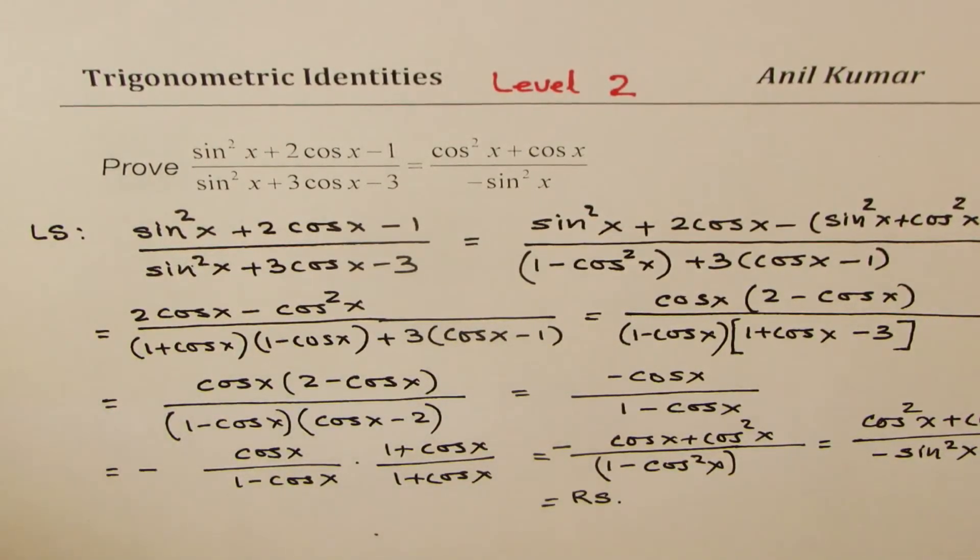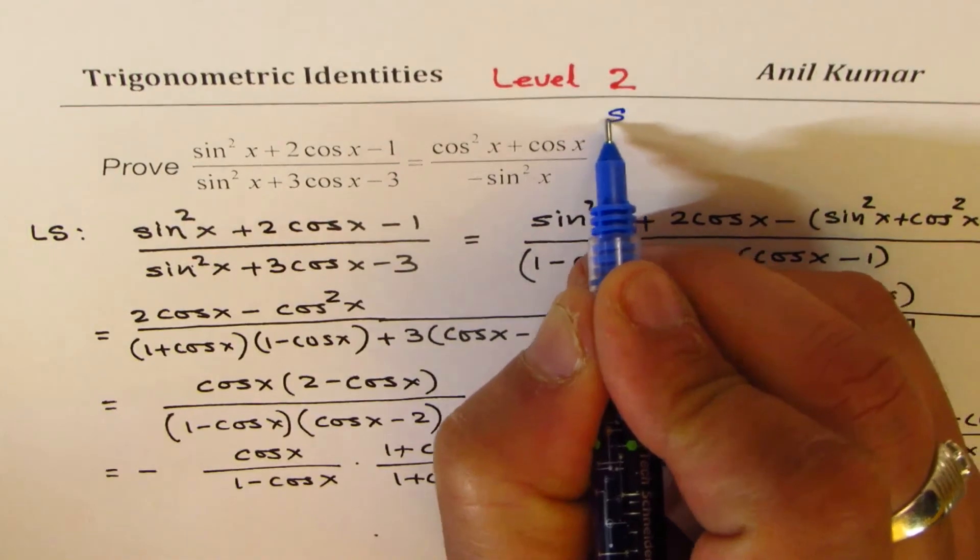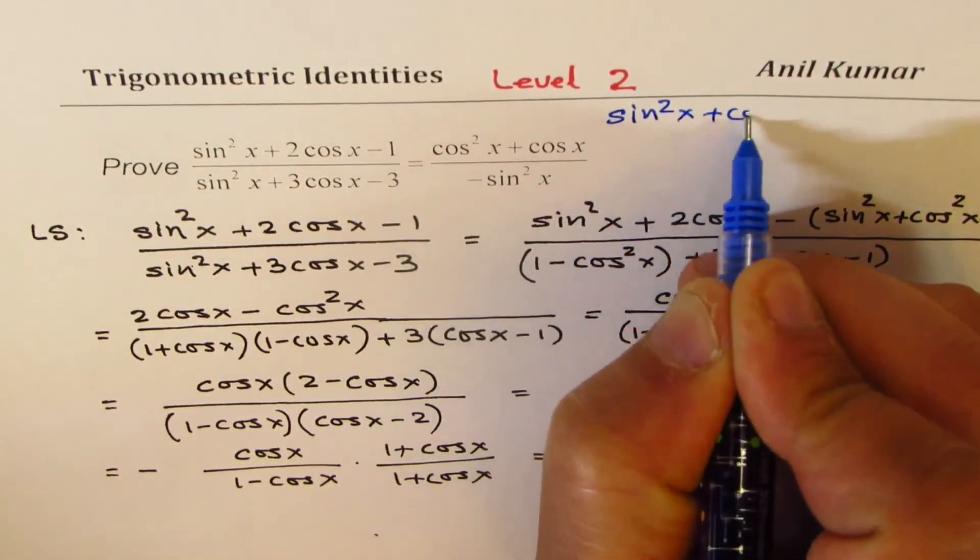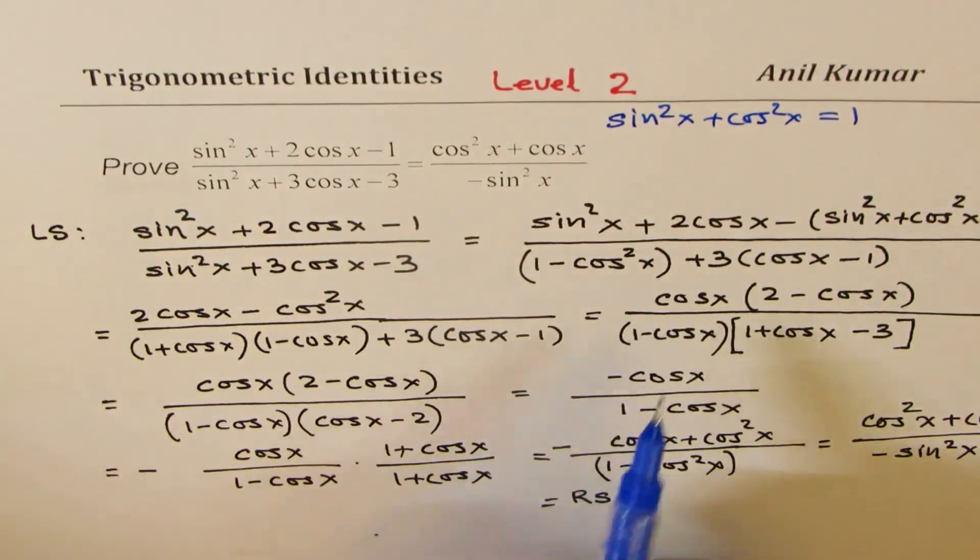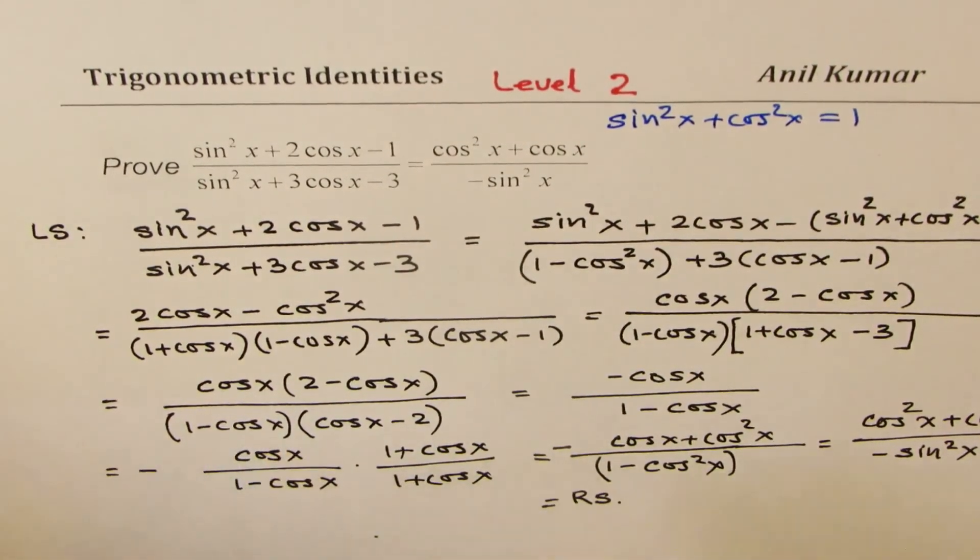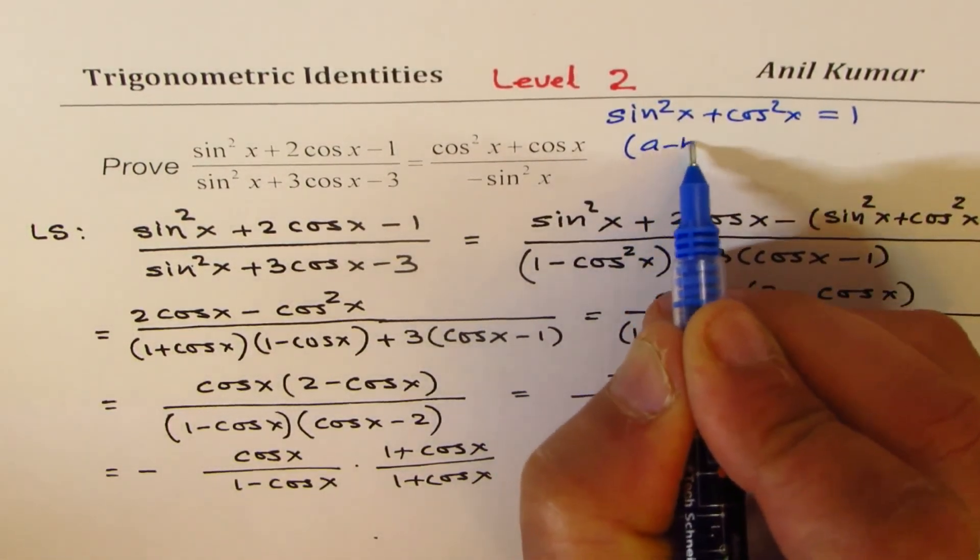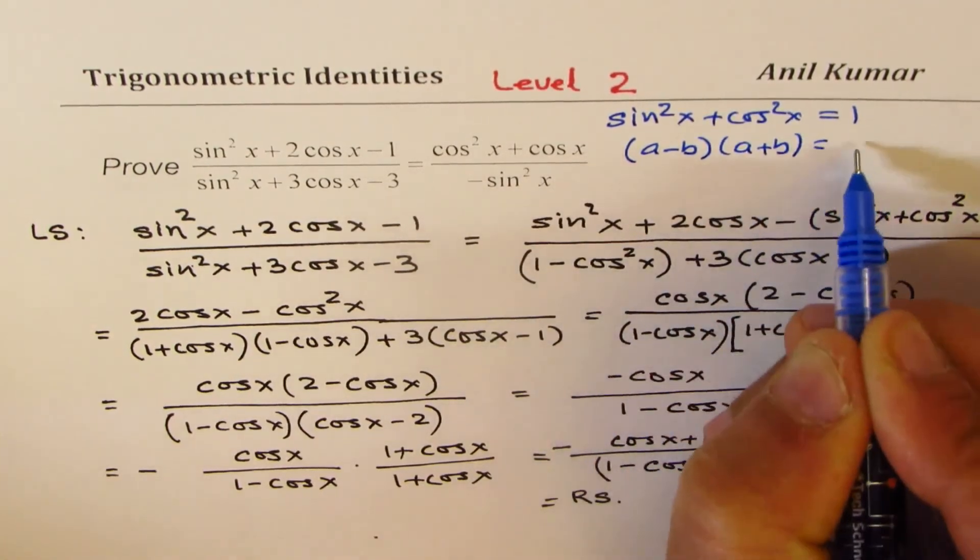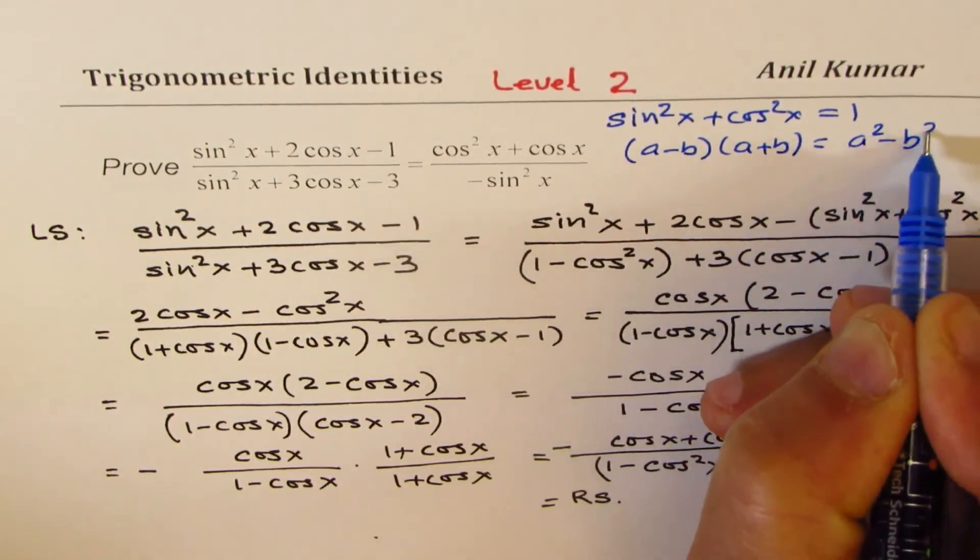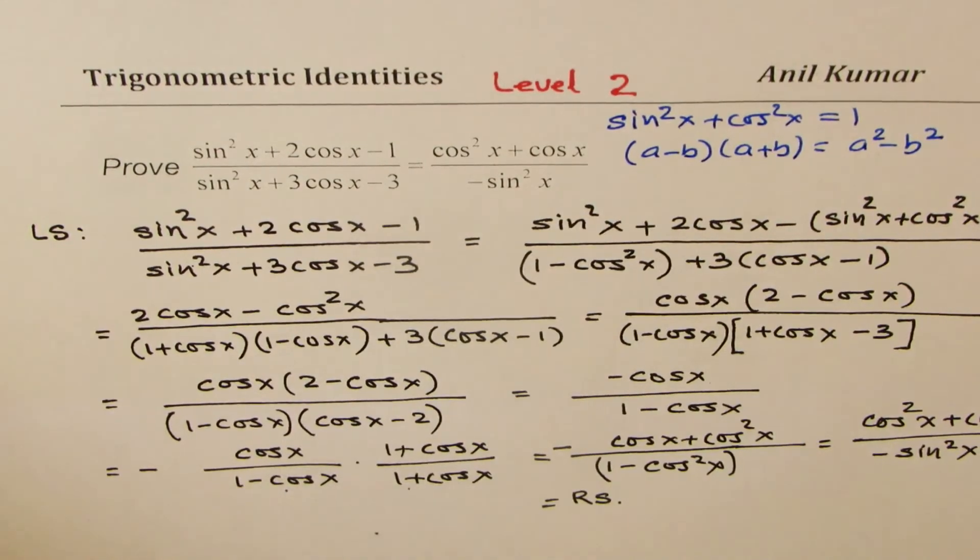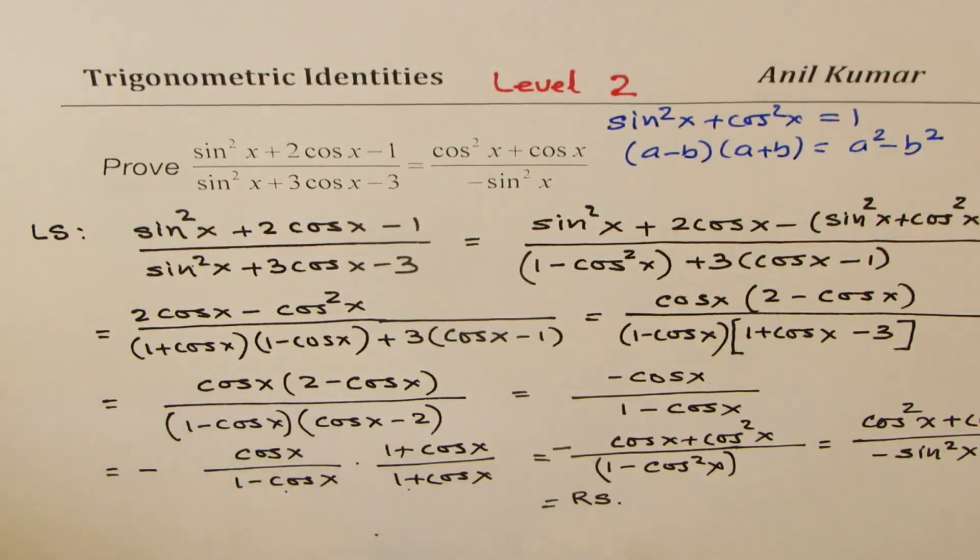So that is how you are going to prove this identity. Now, in this identity, we have used a couple of strategies. One is, we have written sin²x + cos²x for 1. And we have also rationalized, and seen that if I have (a - b)(a + b), what you get is a² - b². These are the two identities which we have used in our proof for the given trigonometric identity.